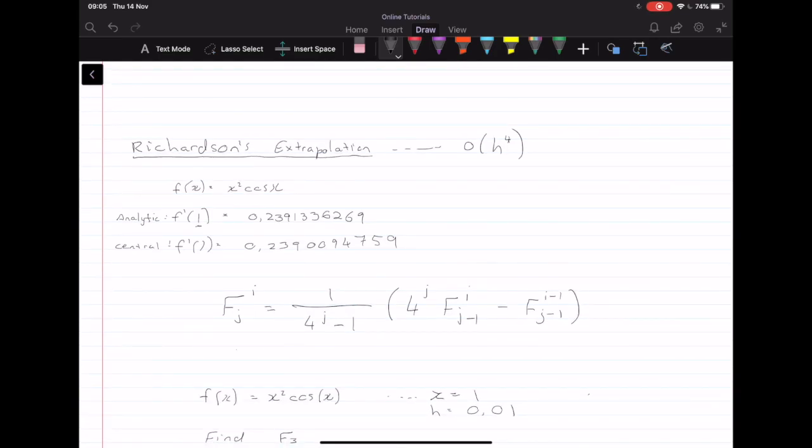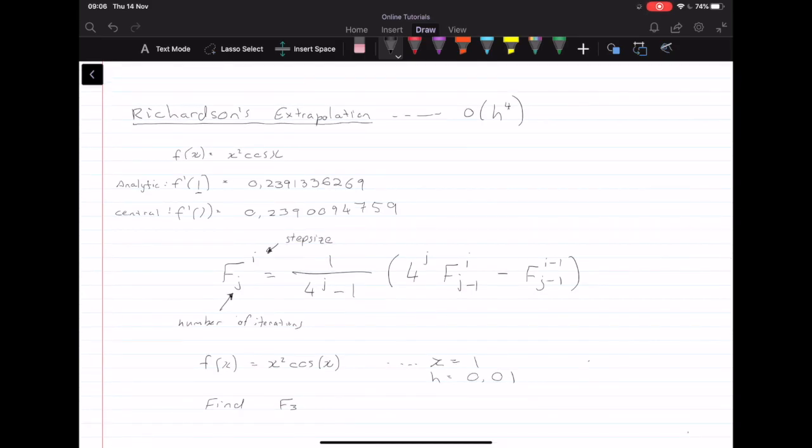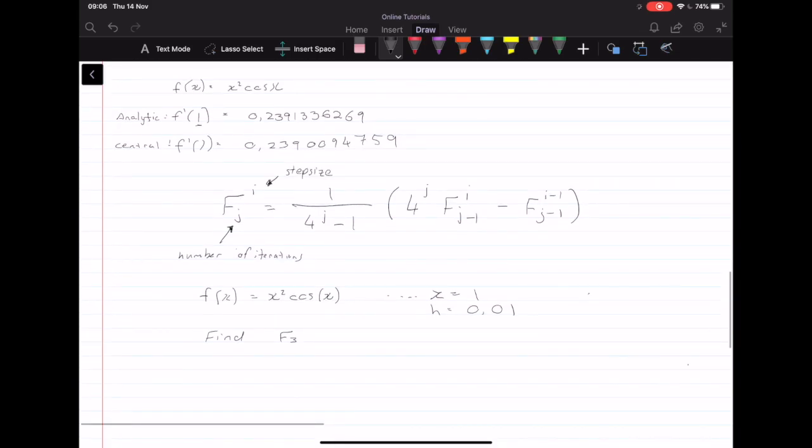And so to tell us what these mean, j represents the number of iterations, and i is representative of the step size, or rather what step size you're at. i doesn't necessarily represent the step size, but it represents where you are.